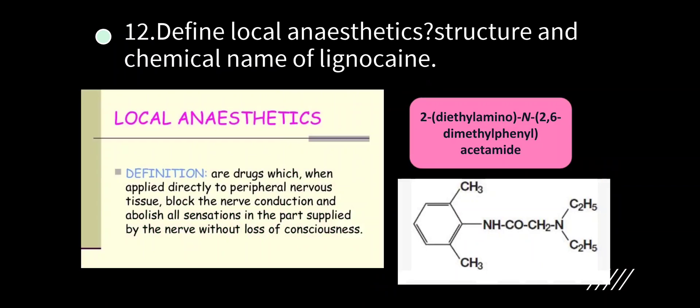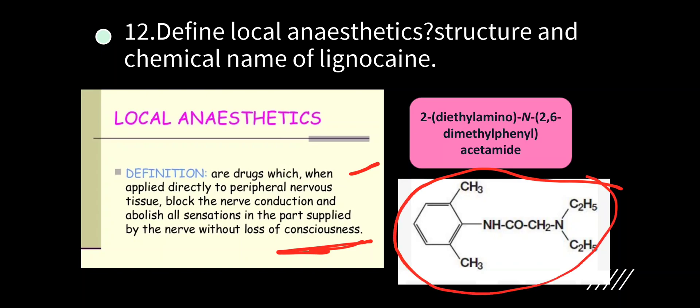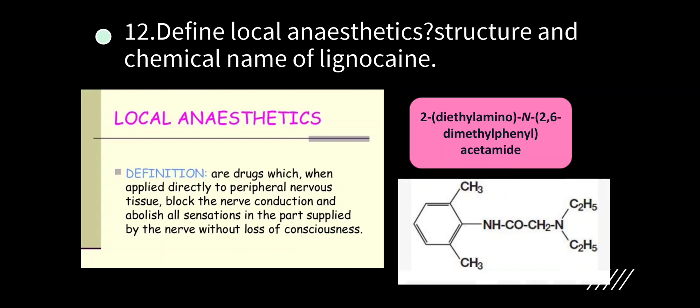Define local anesthetic, structure and chemical name of lignocaine. Local anesthetics are drugs that, when applied directly to peripheral nervous tissue, block nerve conduction and abolish all sensations in the part supplied by the nerves without loss of consciousness — they numb the body and stop signal transmission. Chemical name of lignocaine: 2-diethylamino-N-(2,6-dimethylphenyl)acetamide. The structure has a benzene ring attached to a complex group.